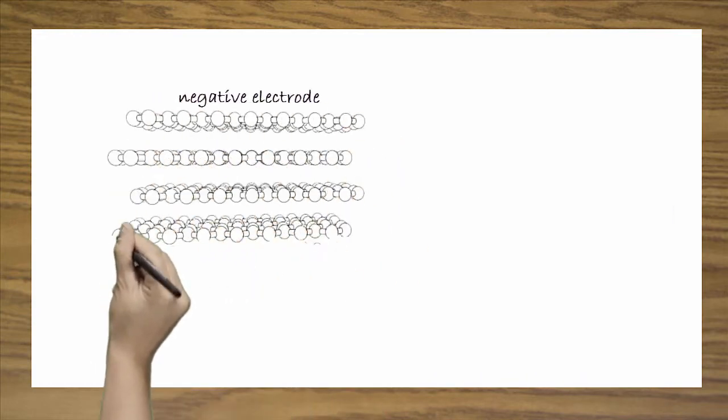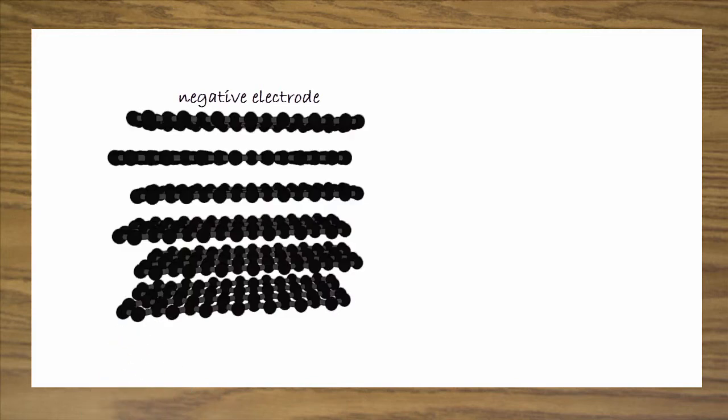Let's now take a closer look at the negative electrode. On the negative side, during charge, the lithium ions, solvated by solvent molecules, approach the surface of the graphite. After losing the solvation shell, the lithium ions are inserted into the graphite sheets.